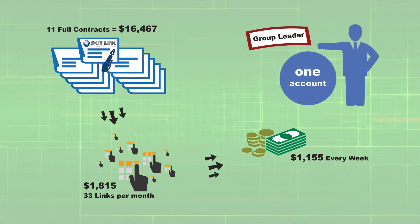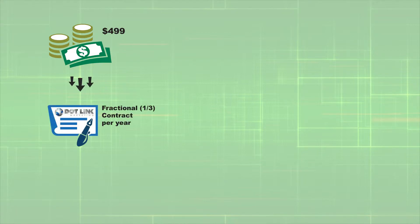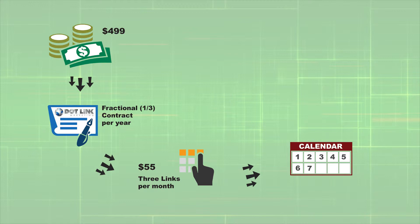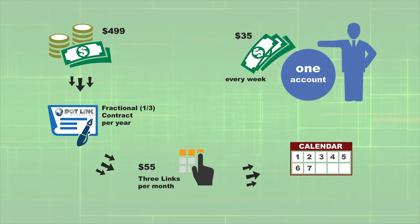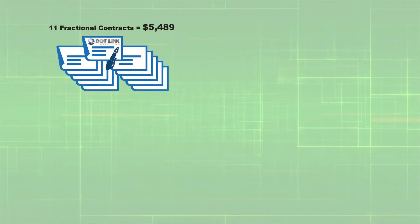This qualifies the promoter as a group leader. With an initial investment of $499 for one fractional contract, you are obligated to maintain a purchase of one daily link chain for a total monthly cost of $55. Click and complete the link chains every day for seven consecutive days and you will receive $35 per week. Under your account you can have up to 11 total fractional contracts.